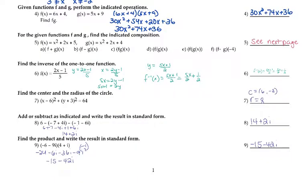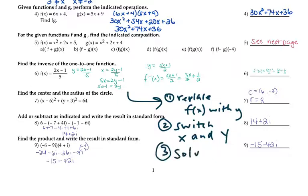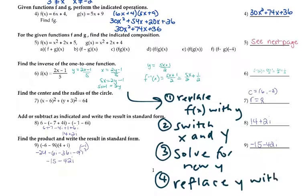Number 6 was your inverse. Remember, for inverse: first replace f(x) with y, then switch x and y, then solve for the new y, and replace y with f inverse of x. For number 6, you should have gotten f inverse of x equals (x plus 1) over 2. This is multiple choice, so it's going to be written in that form — you don't need to split that one.